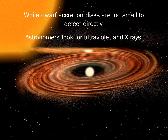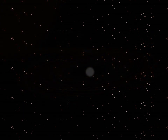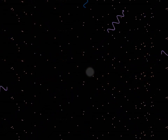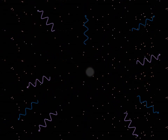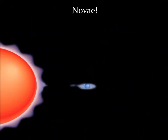We can't see these disks directly — they're too small. But we should be able to detect the intense ultraviolet or X-ray radiation. Astronomers have searched for this radiation and have found strong evidence for accretion disks around many white dwarfs via ultraviolet and X-ray observations. The material from the companion star is mainly hydrogen gas, and as it spills into the accretion disk, it forms a shell of hydrogen on the white dwarf.